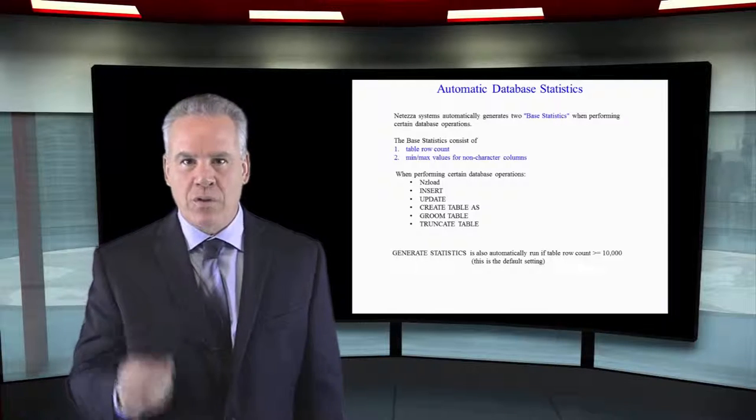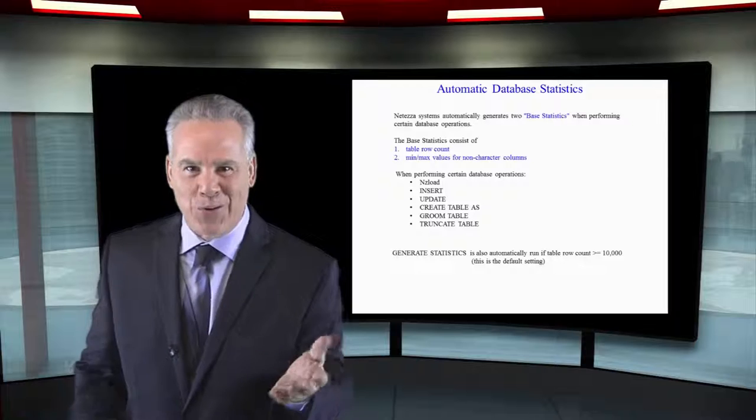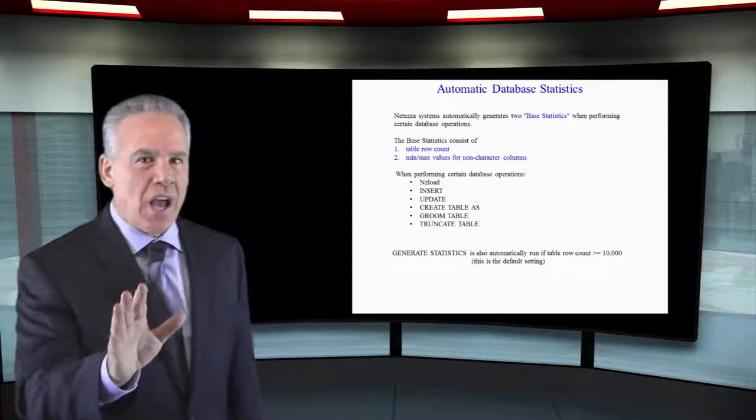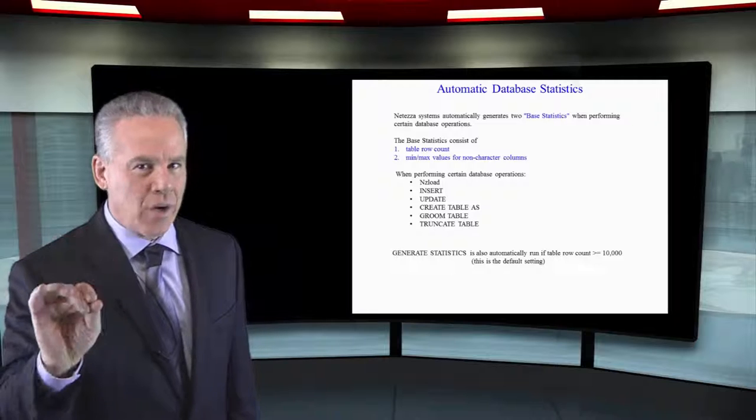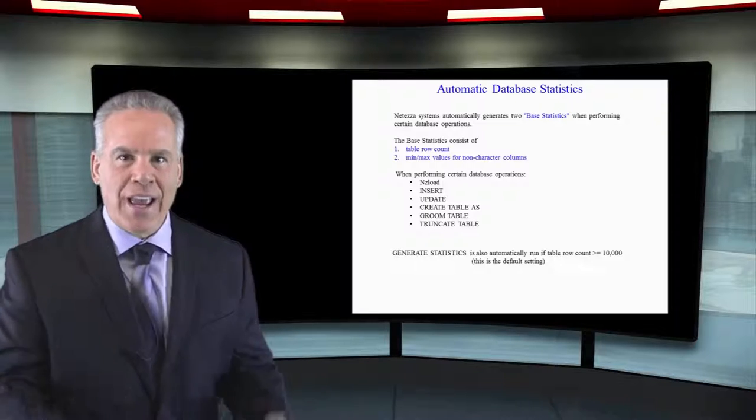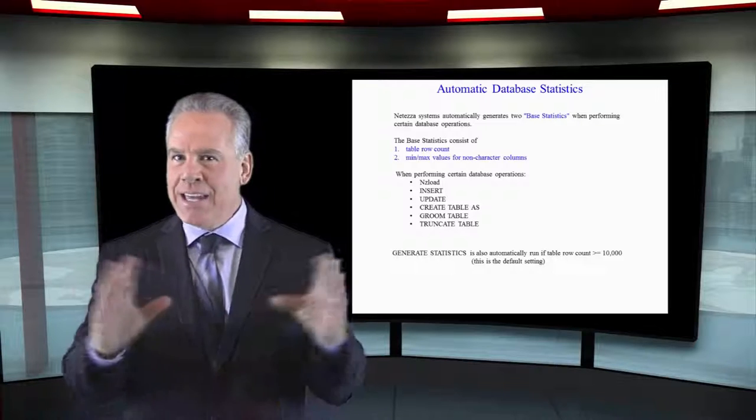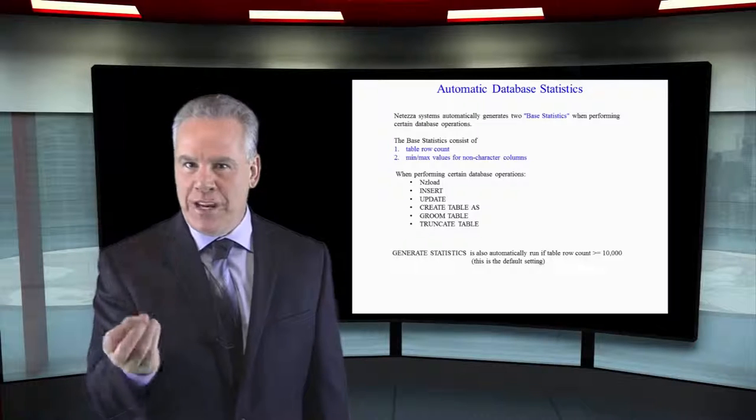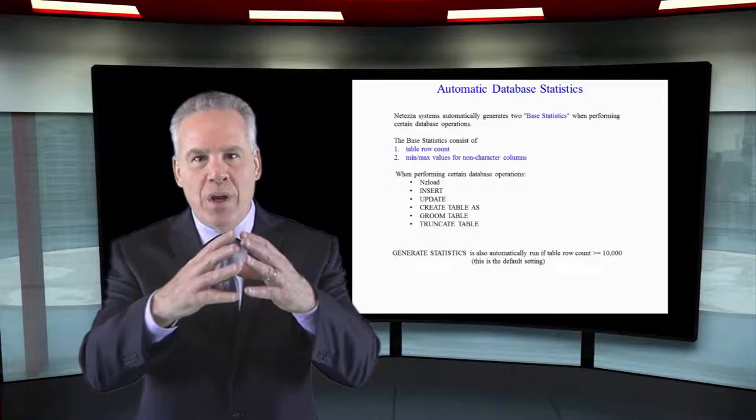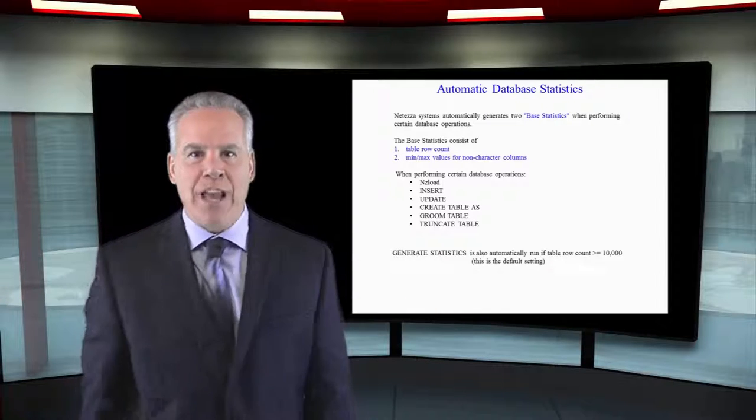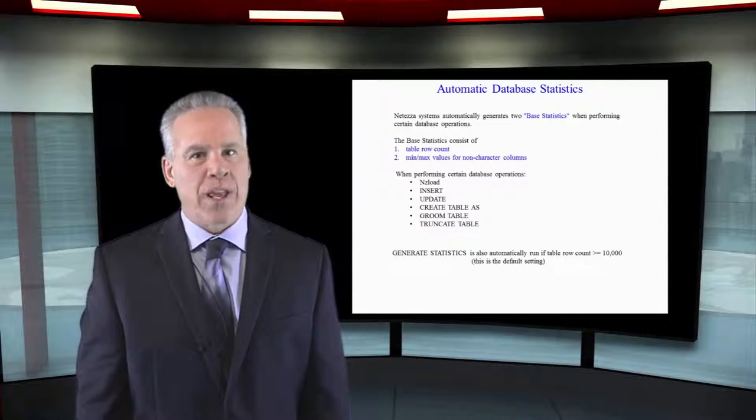First and foremost, how many rows are in the table? Is it big? Is it small? Secondly, on all non-character columns, it's going to get the min, max values and those are for the zone maps. Any table that's got more than 10,000 rows in it and that's the system default is going to generate statistics and that again helps the optimizer come up with the plan.